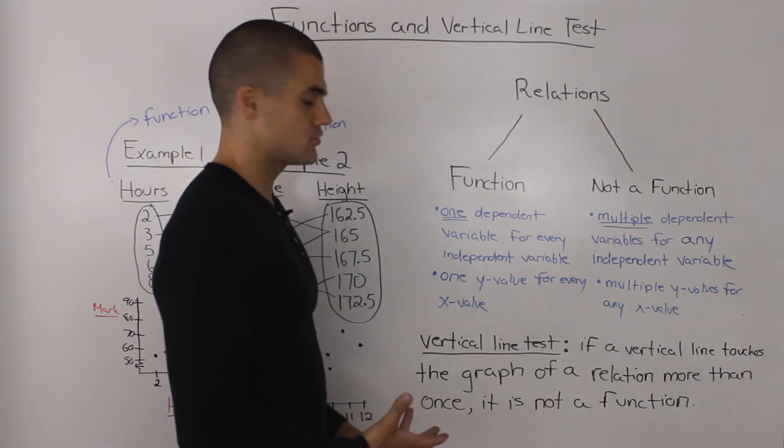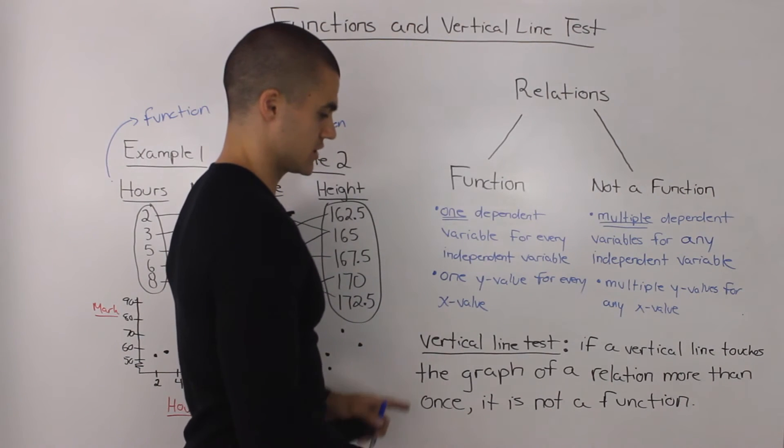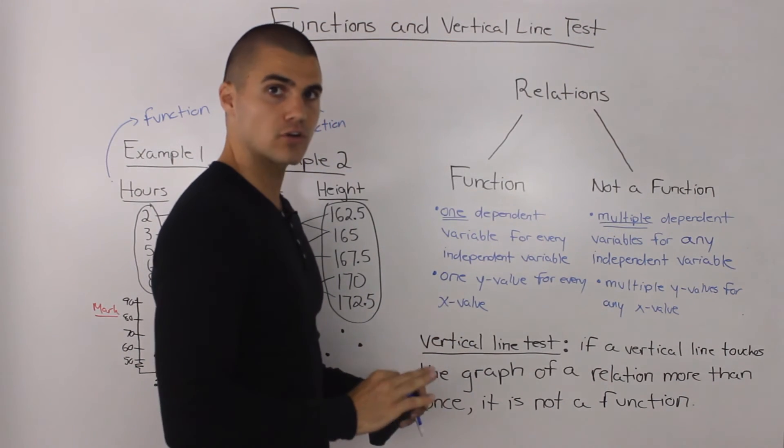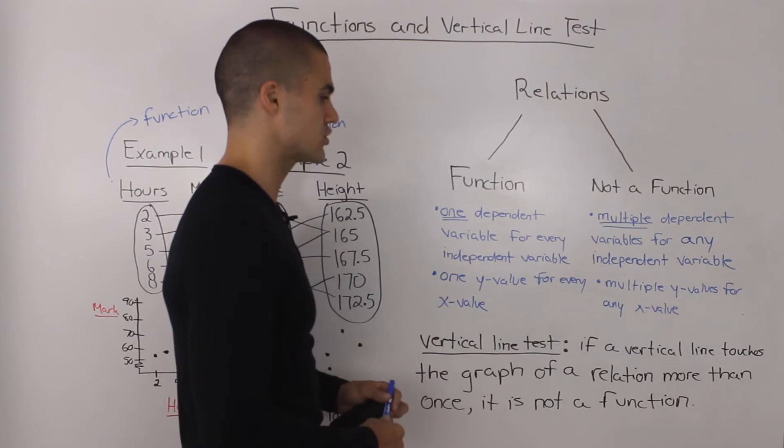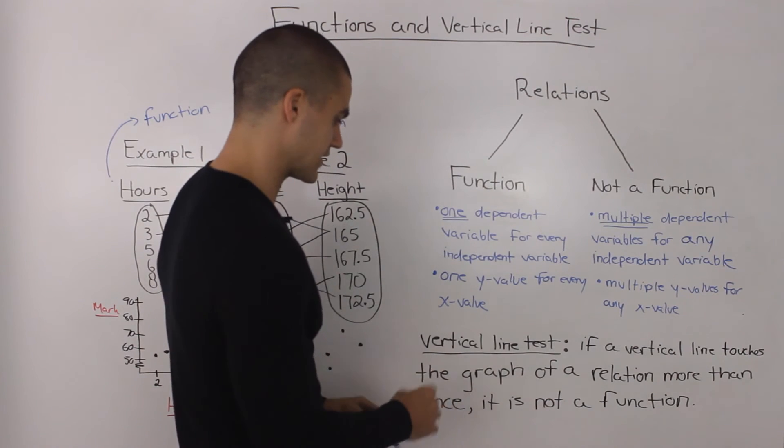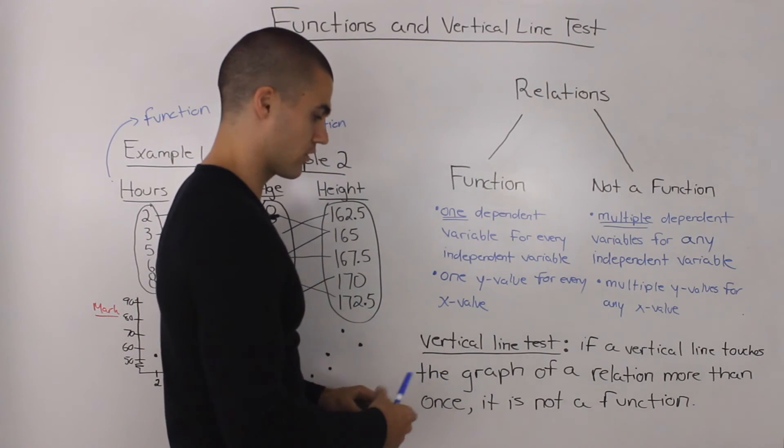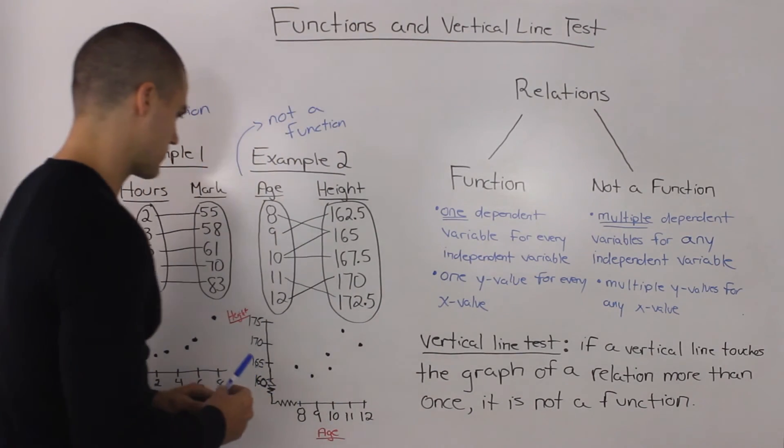Another tool that you can use to determine whether a relation is a function or a non-function is something called the vertical line test. Now the vertical line test only works when you have the graph of a relation. And it basically states that if a vertical line touches the graph of a relation more than once, it is not a function.